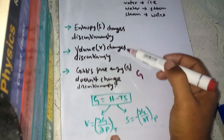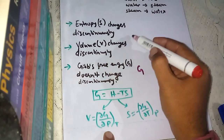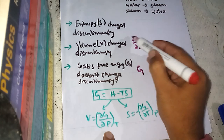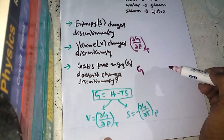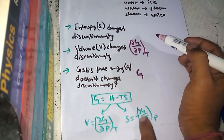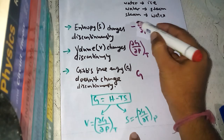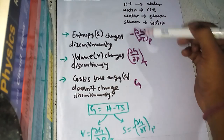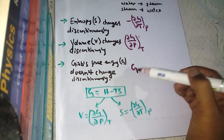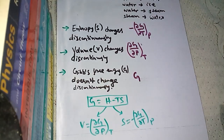Since volume equals ∂G/∂P at constant temperature, we can say that this derivative changes discontinuously in first order phase transition. Similarly, since entropy equals −∂G/∂T at constant pressure, this quantity changes discontinuously. So ∂G/∂P and ∂G/∂T change discontinuously, but G itself does not. There are standard graphs for these, which you may also find in textbooks.